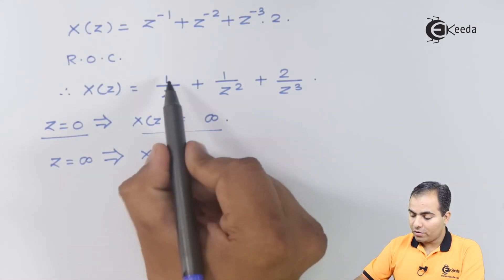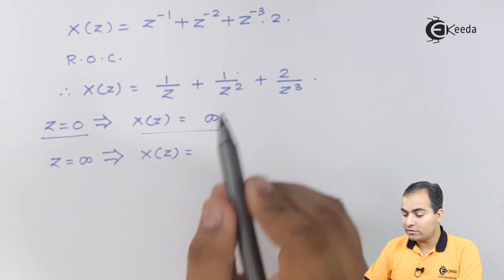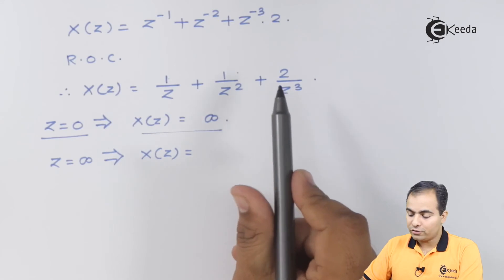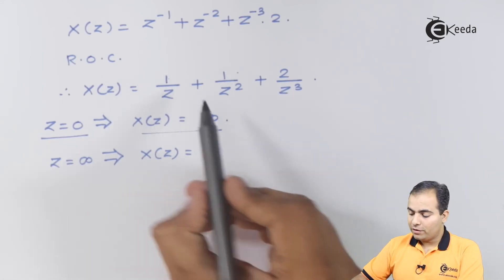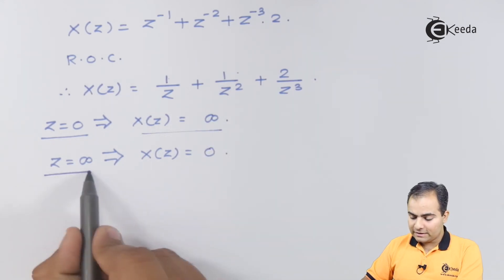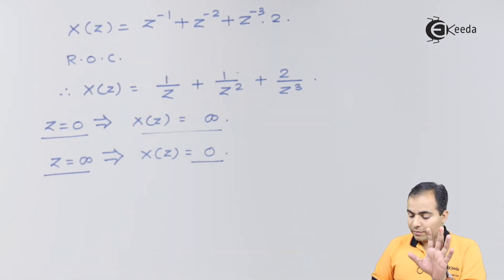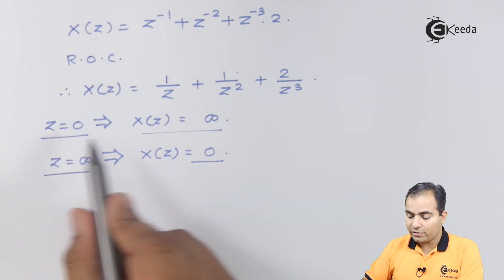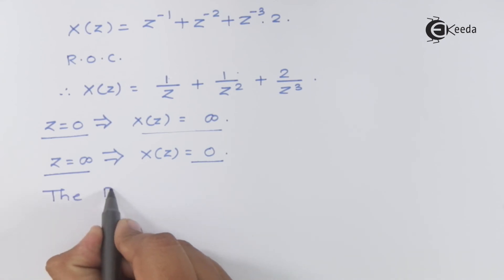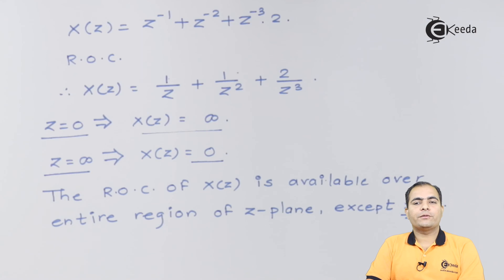If we substitute z equals infinity, then one over z is zero, one over z squared is zero, and two over z cubed is also zero. So all three terms give zero — a finite result. This means our ROC covers the entire region of the z-plane, but excluding z equals zero, because that value gives an infinite result. That's all for now, thank you for watching — stay tuned with iKeda and subscribe for more videos.